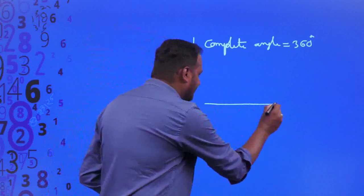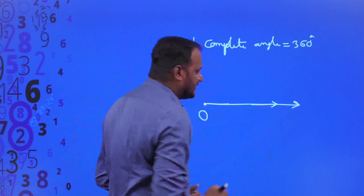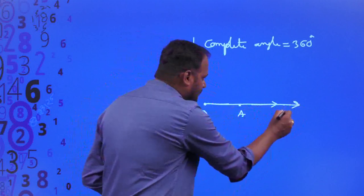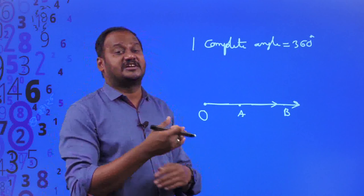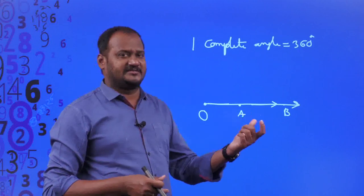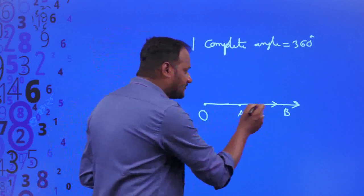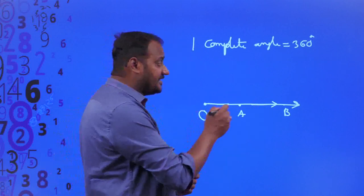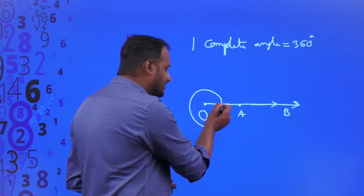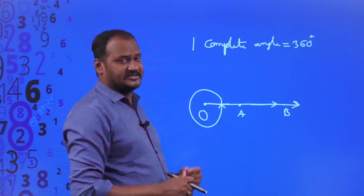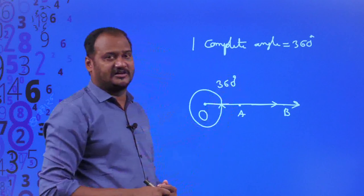They concluded that one complete revolution equals 365, but 365 is not a friendly number because it has few factors. So they took the nearest number, 360, which has many factors, and considered it as one complete angle. That is why 360 degrees is called one complete angle. For example, if initial ray OA and terminal ray OB coincide, the angle is 0 degrees; if OB rotates anti-clockwise back to OA after one complete revolution, the angle formed is 360 degrees.